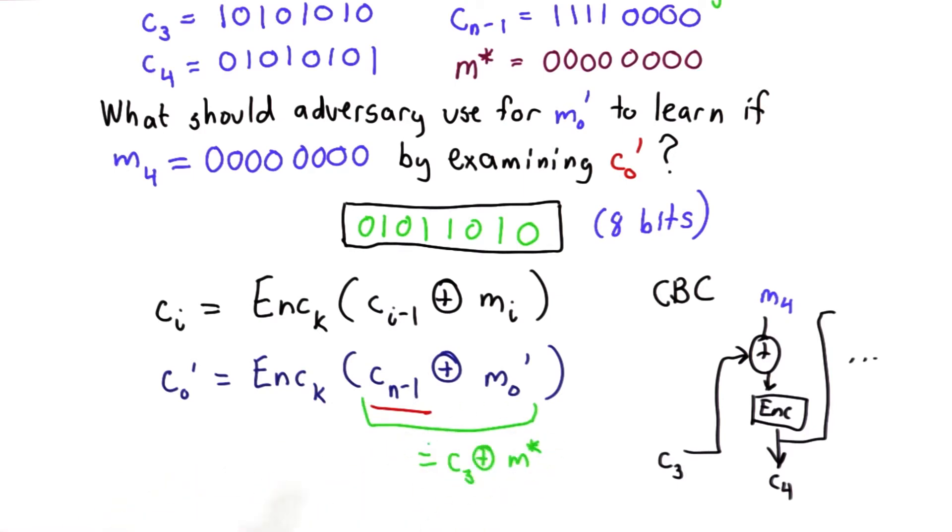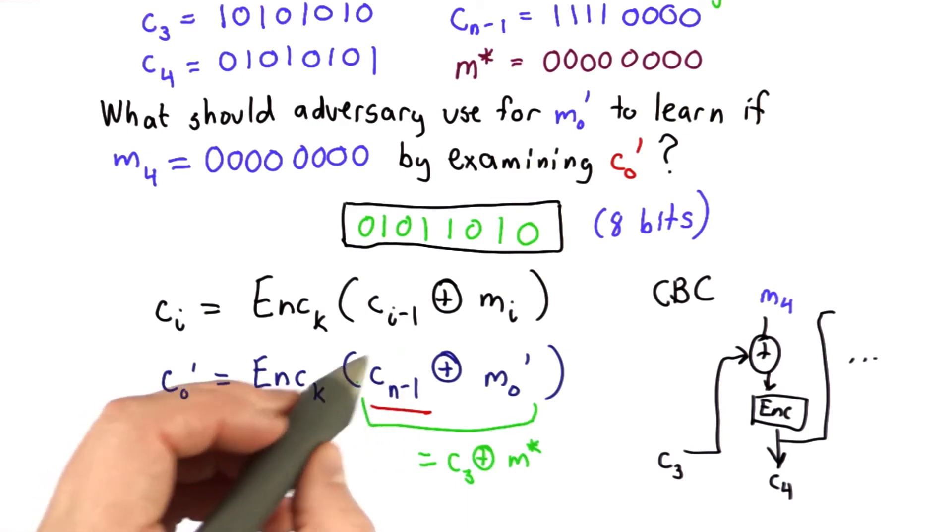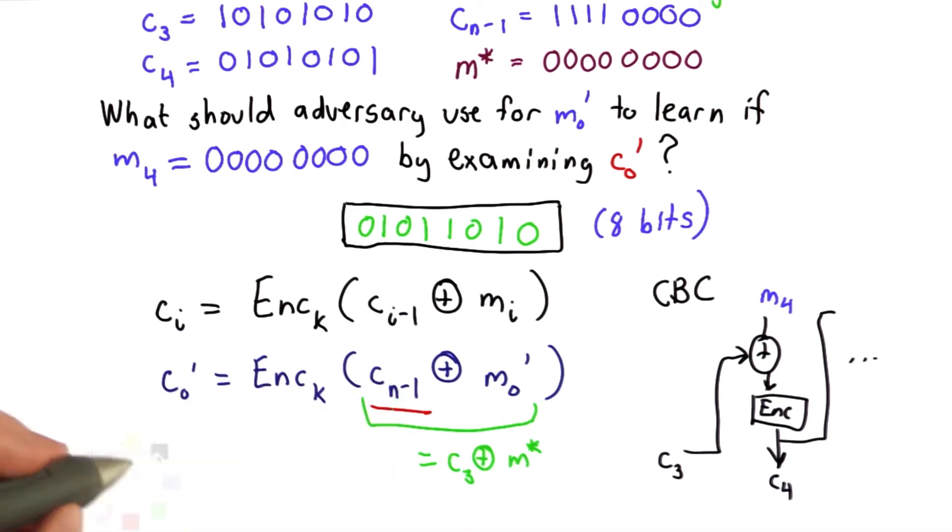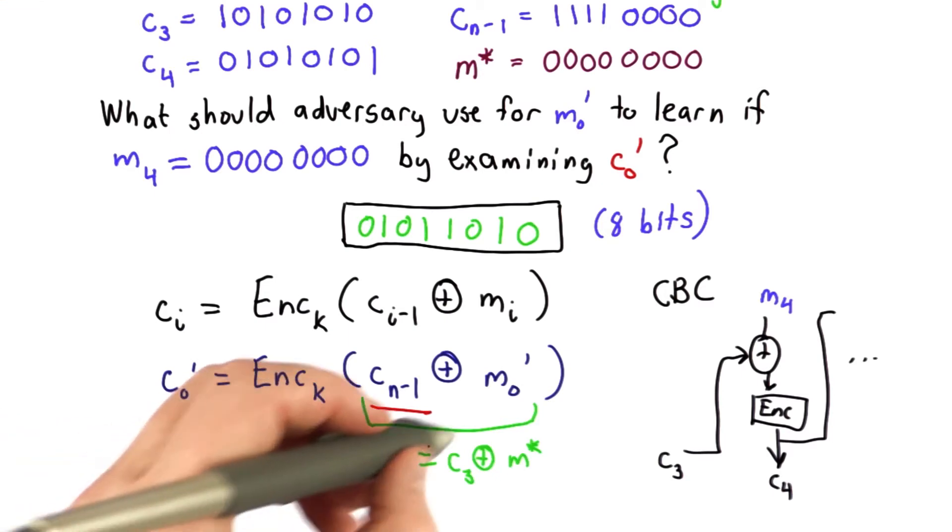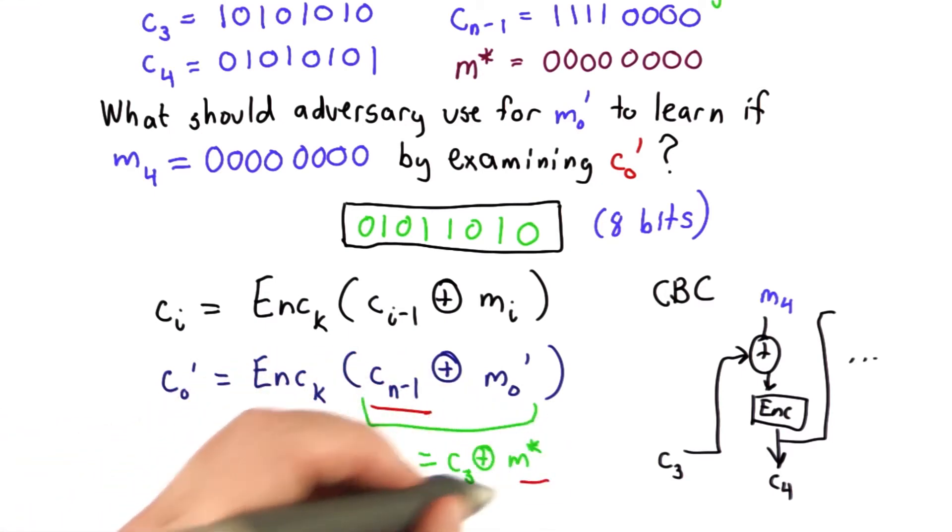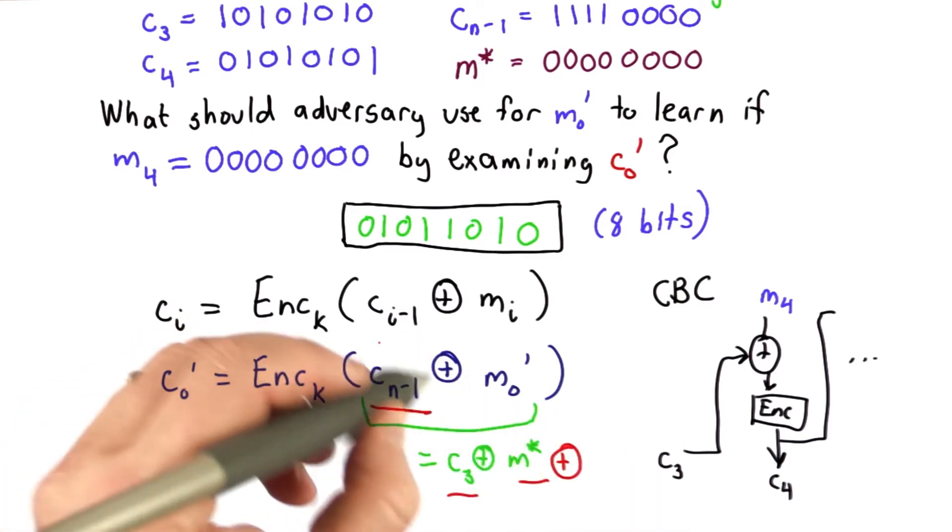If that's the input to the encryption function, then we'll be able to look at the output and see if it matches C4. So to make that the input, we have this iv, which is really the last block in the previous message. We can just xor that out. So what we're going to pass in is the guess xord with the known value of C3, xord with this value.